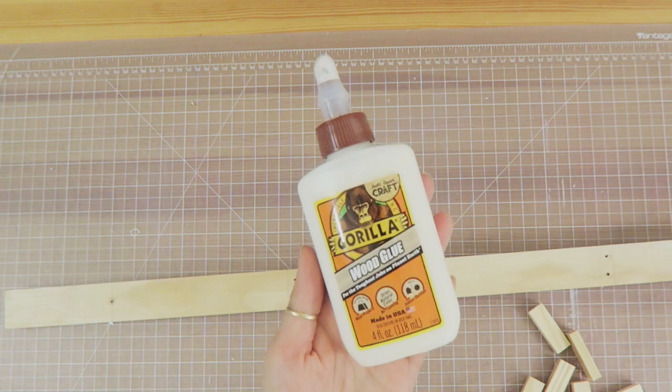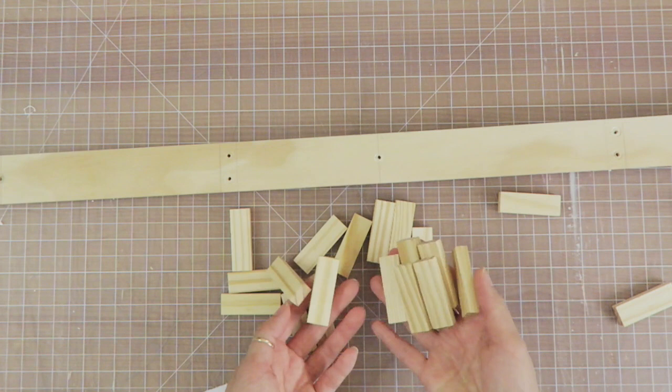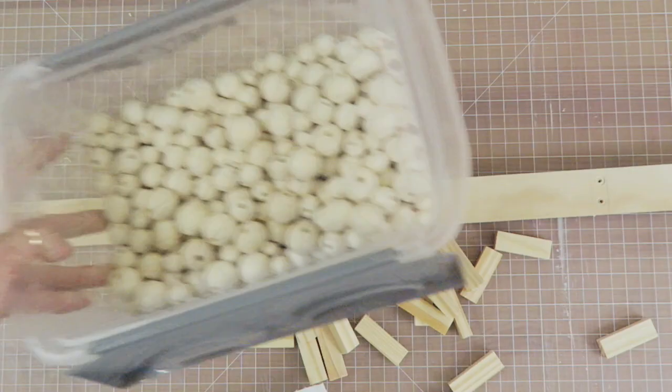For this project, I'm going to use Gorilla Glue wood glue, some Jenga blocks from the Dollar Tree because I'm obsessed with this stuff, and some wooden beads I have left over from other projects.